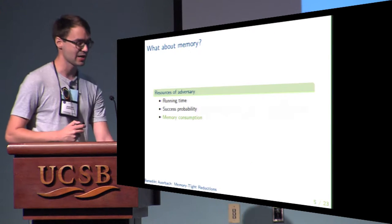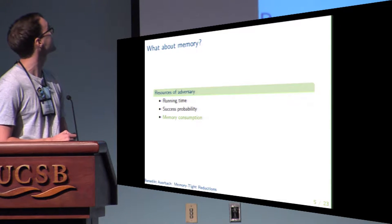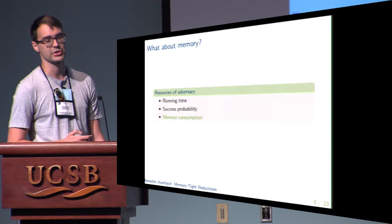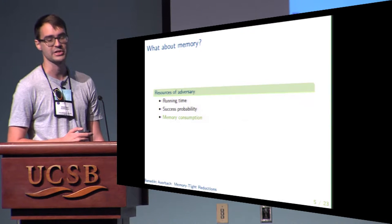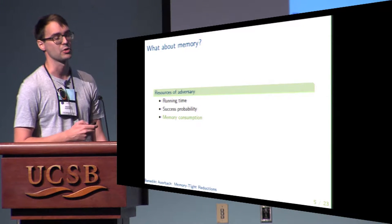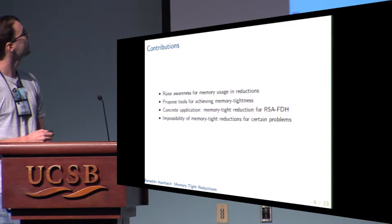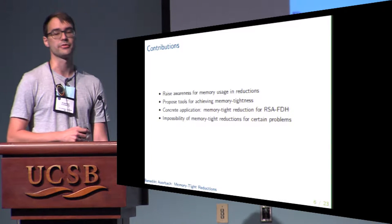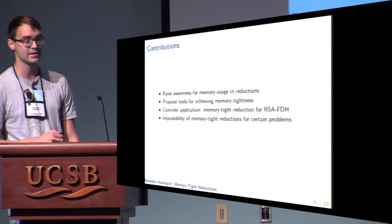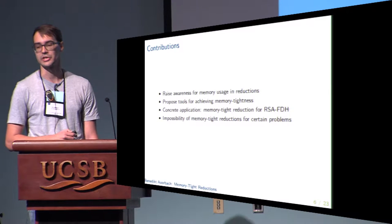Usually when talking about tightness we only consider running time and success probability. However, if one talks to cryptanalysts, they will probably tell you that memory is also a very important resource and actually the most expensive one. In our work we consider the role of memory in cryptographic reductions and conclude that indeed memory can be crucial when making concrete security statements.